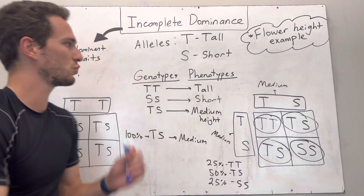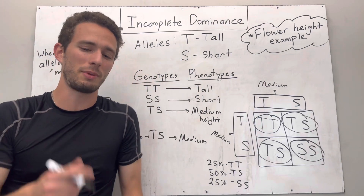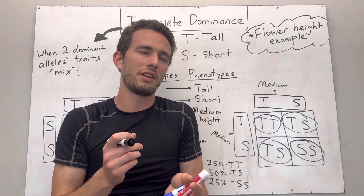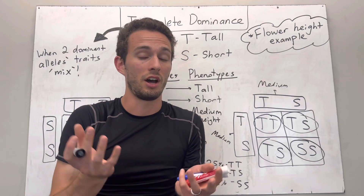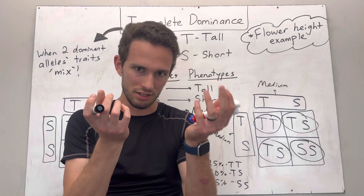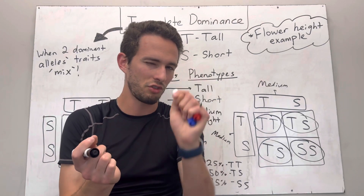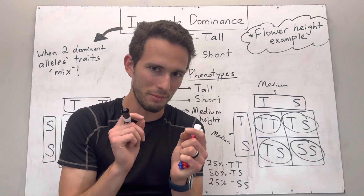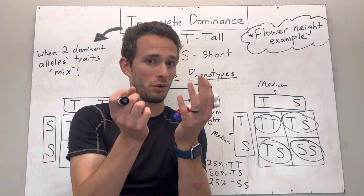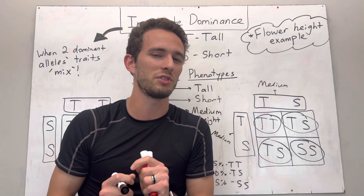So incomplete dominance is when the alleles mix. If you watched the last video on codominance, I talked about black and white fur types in cats. Well, what if that's an incomplete dominant inheritance? So if you have a B — black — and W — white — allele, what would happen if they mix? Drop in the comments below what an incomplete dominant cross that makes B and W — black fur and white fur — what the phenotype would be for that cat.